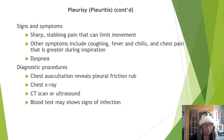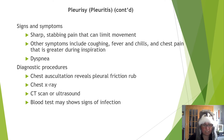Signs and symptoms of pleuritis include a sharp stabbing pain that can limit movement, coughing, fever, chills, dyspnea, and chest pain that increases during inspiration. It is diagnosed with auscultation of the chest that reveals a pleural friction rub, a chest x-ray, CT or ultrasound, and blood tests that could show signs of infection.